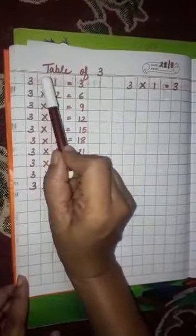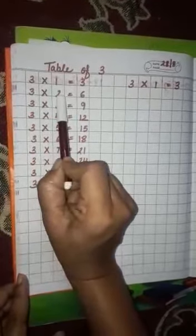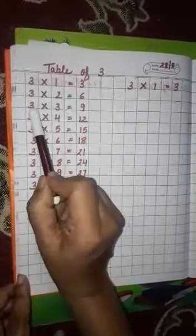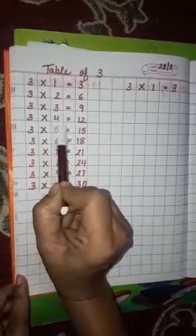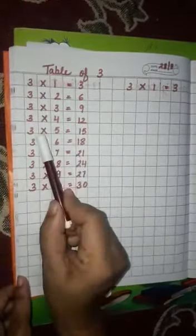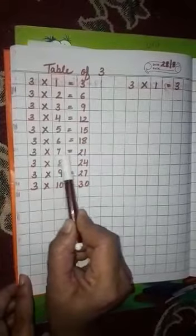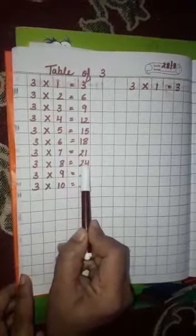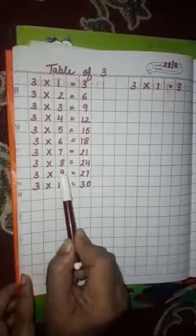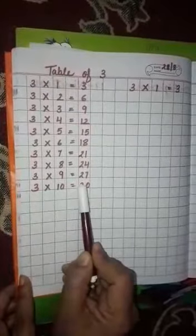Say with me: 3 ones are 3, 3 twos are 6, 3 threes are 9, 3 fours are 12, 3 fives are 15, 3 sixes are 18, 3 sevens are 21, 3 eights are 24, 3 nines are 27, 3 tens are 30.